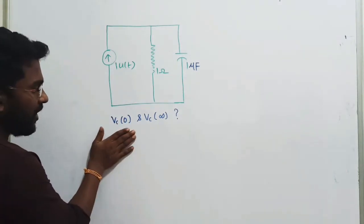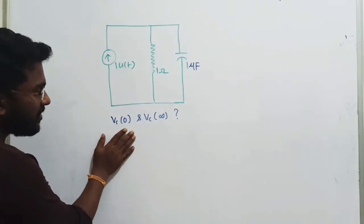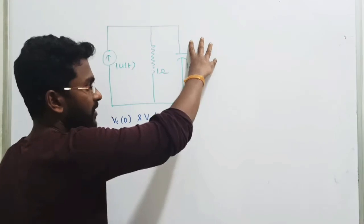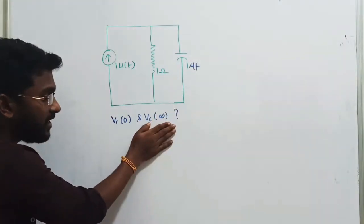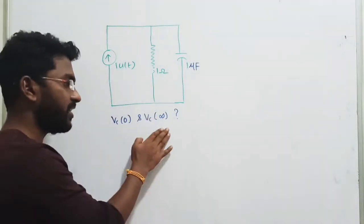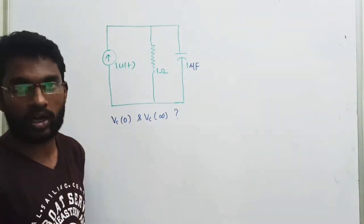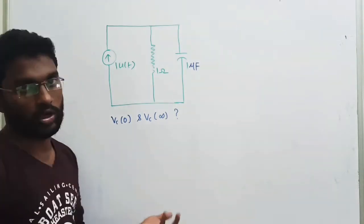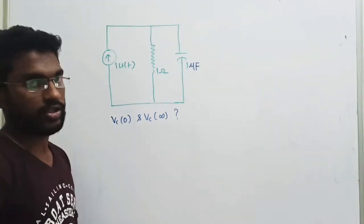Now the question is: what is the value of Vc(0), that is the initial voltage drop across the capacitor, and the steady state — final, infinity — or final voltage across the capacitor? That is the question.